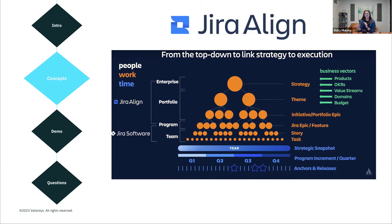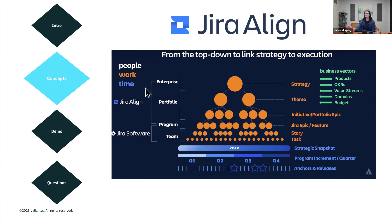As teams are working in Jira Software — creating their work, planning it out, running sprints, starting and stopping sprints, and moving work through the workflow until it is completed — all of that data is driving up into those higher levels of scale, helping us connect our strategy to our execution.